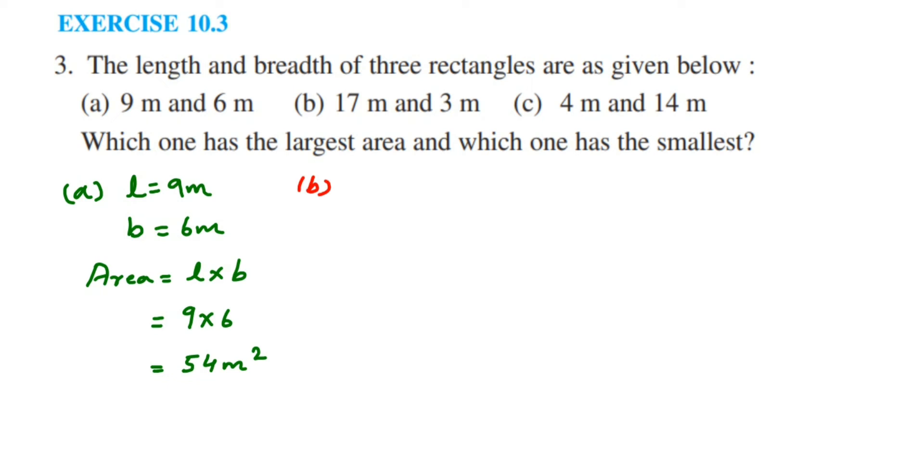The next one: length is equal to 17 meter and breadth is equal to 3 meter. So area is equal to length into breadth. 17 times 3 equals 51 meter square.